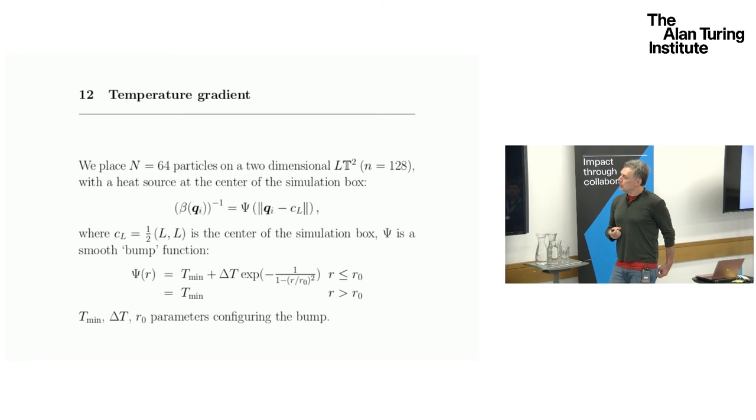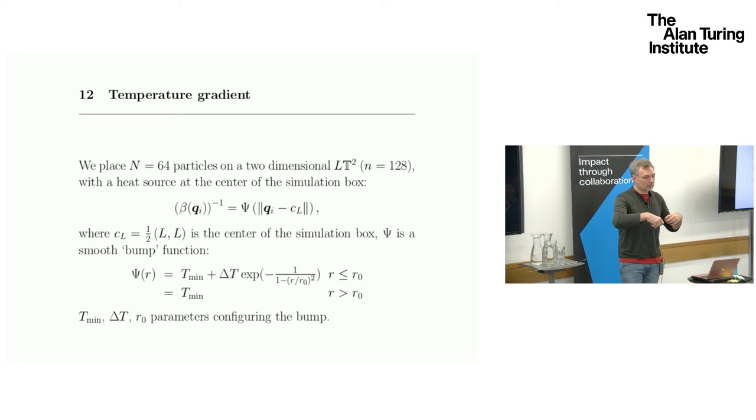We pick up 64 particles. They are going to interact. We have yet to say what the potential is. The potential is going to try to keep them apart somewhat. It's slightly repulsive. I'll show you the potential next slide. We have a two-dimensional torus. So we have 128 position coordinates to track.